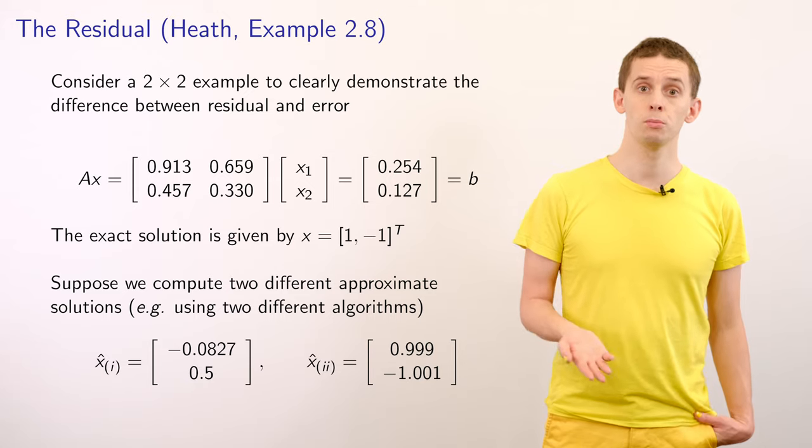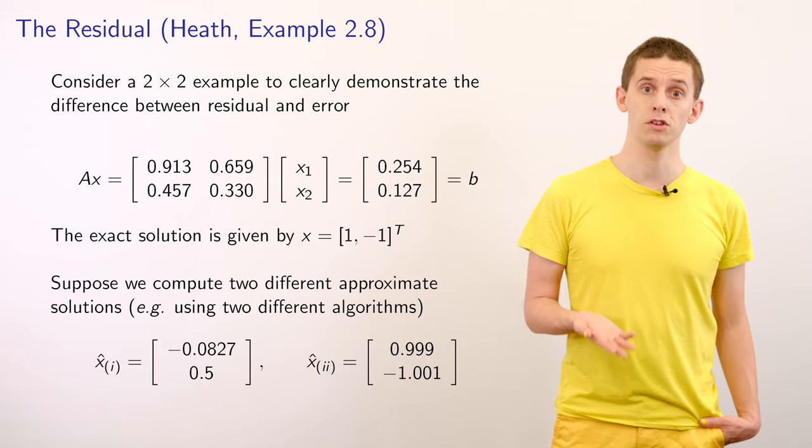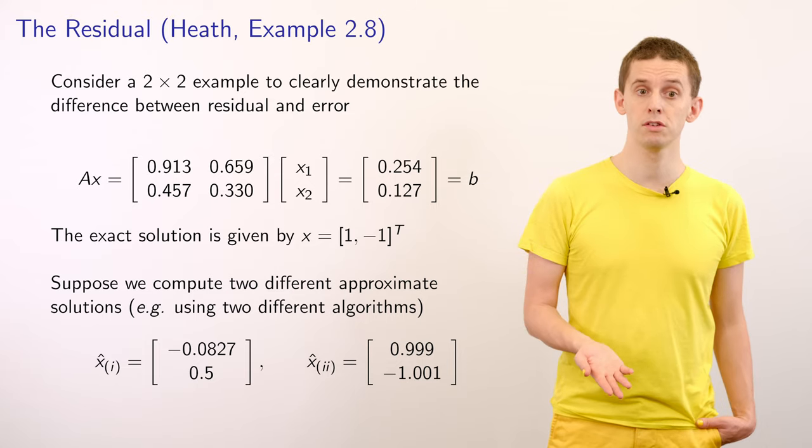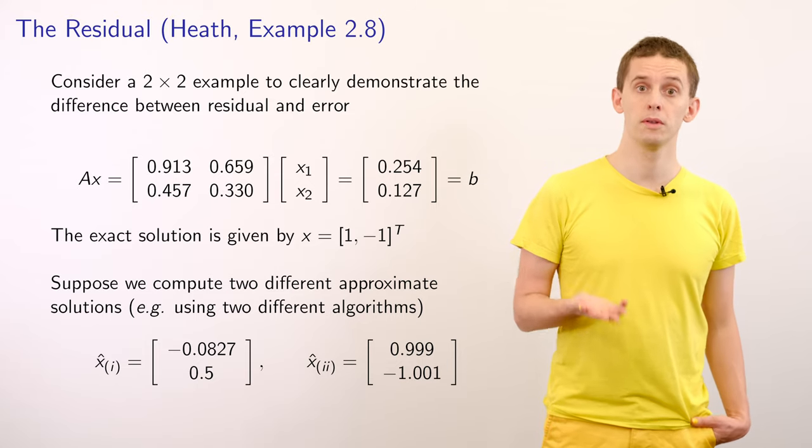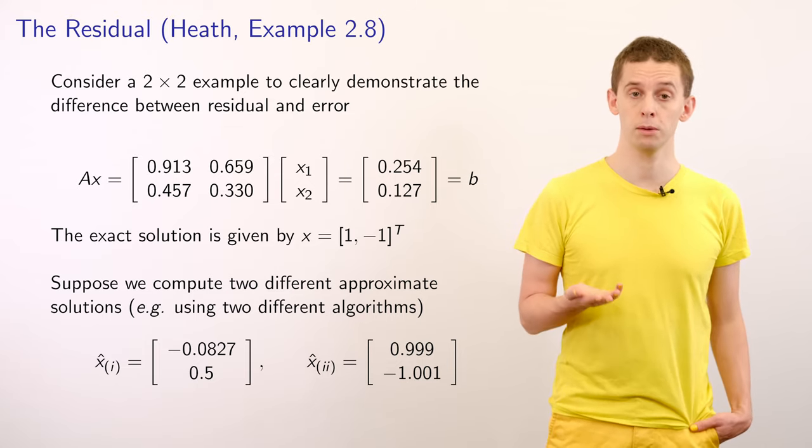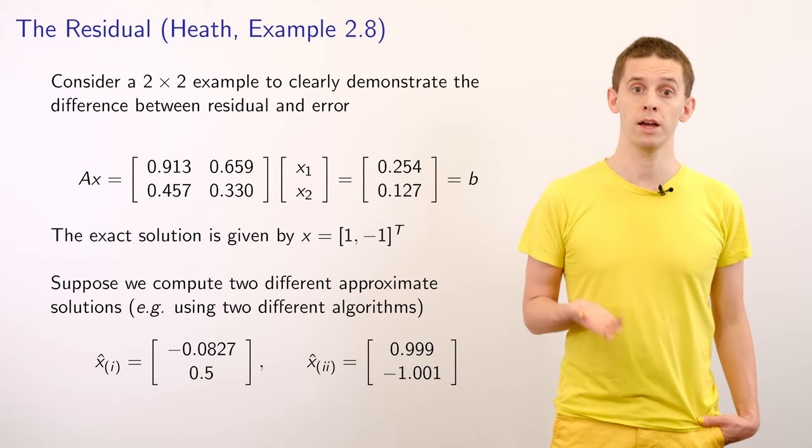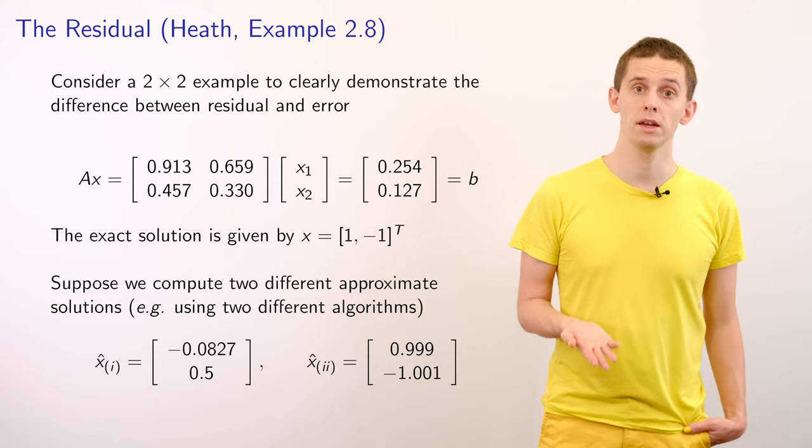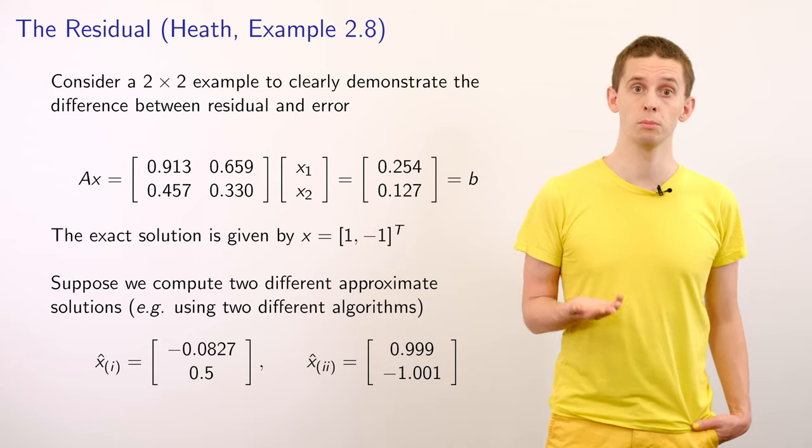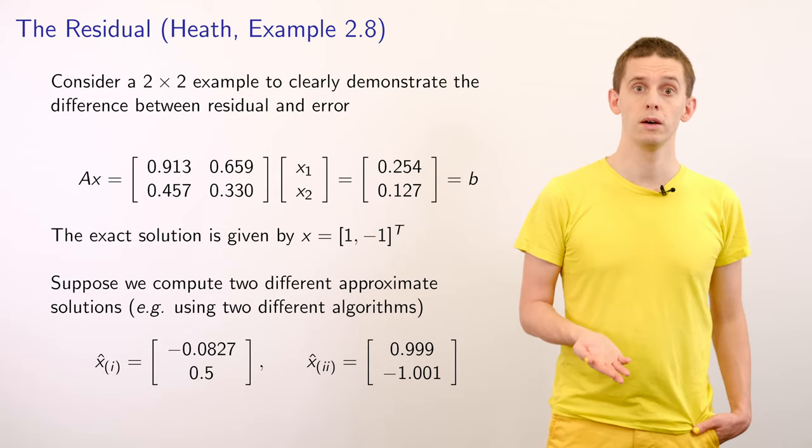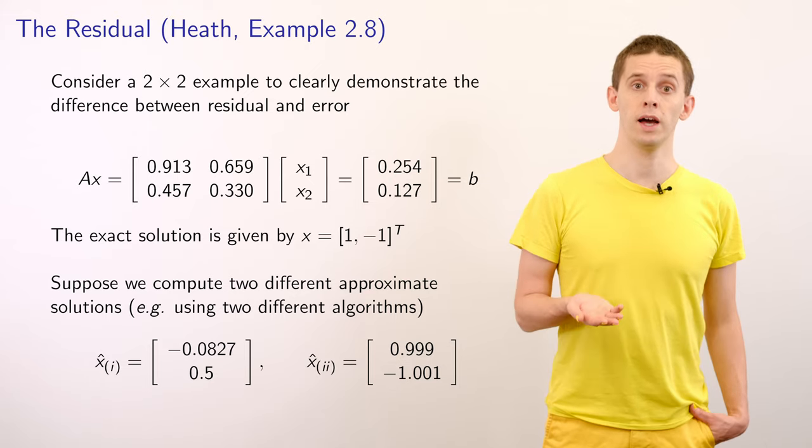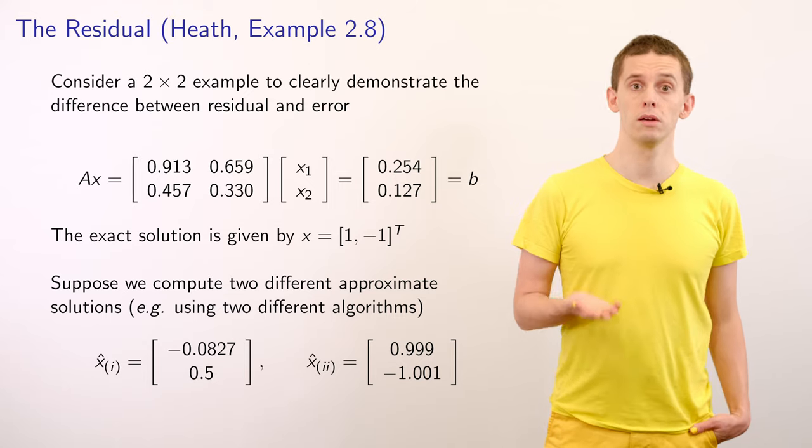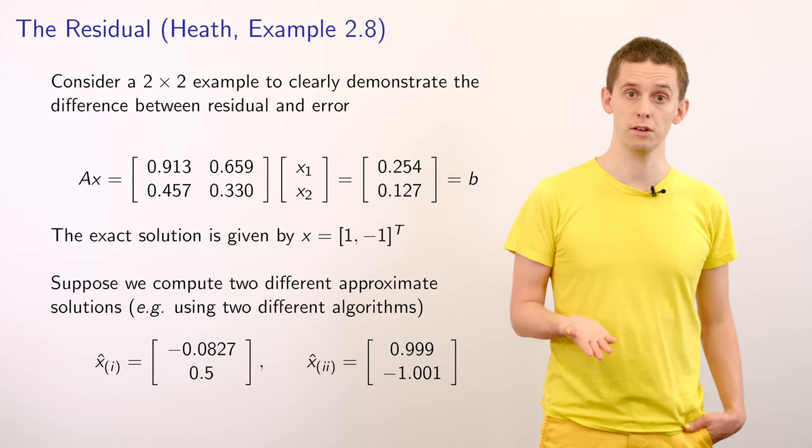So now let's look at two proposed numerically computed solutions, x̂₁ with components of -0.0827 and 0.5 and x̂₂ that has components of 0.999 and -1.001. And so we can see here that x̂₂ is definitely closer to our true solution x.